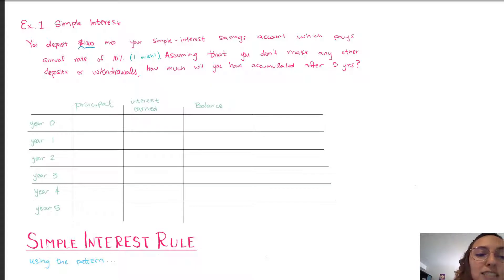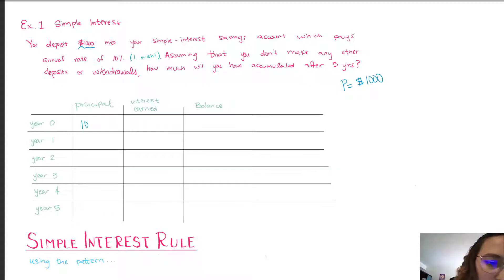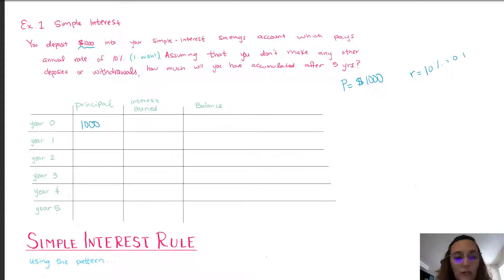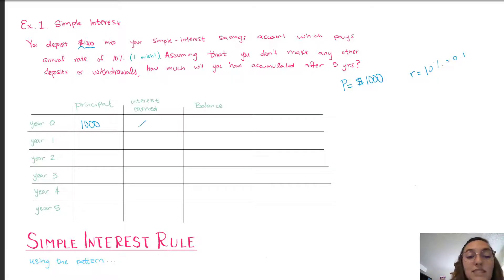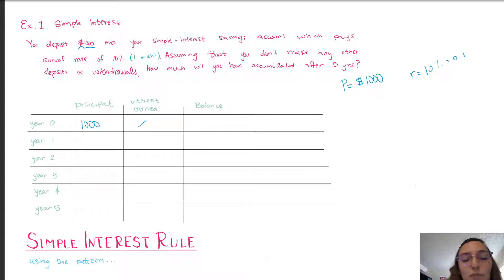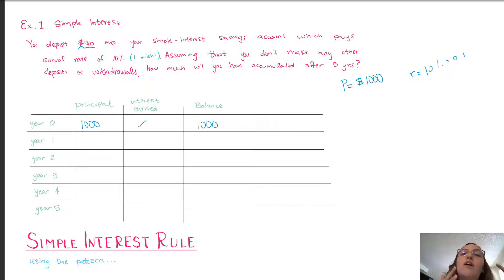As we stated earlier, the principal amount is not going to change. So the principal in this scenario — I'm going to denote that by P — is $1,000. This is the amount that we deposited. The interest rate is going to be 10% or 0.1. The interest that is earned right after we deposit those $1,000 is zero — there is no interest. You have to let the money sit in an account before you start accruing interest. So the balance at the end of year zero is going to be $1,000. The principal is going to stay the same for every single year; the interest is always going to be accrued on this initial amount of $1,000 every year.